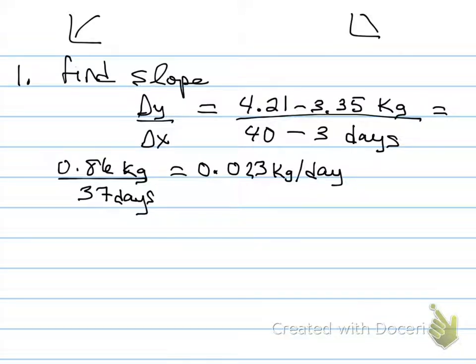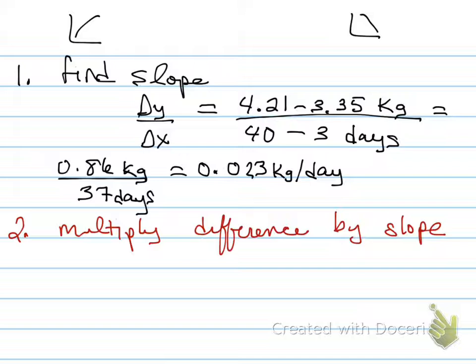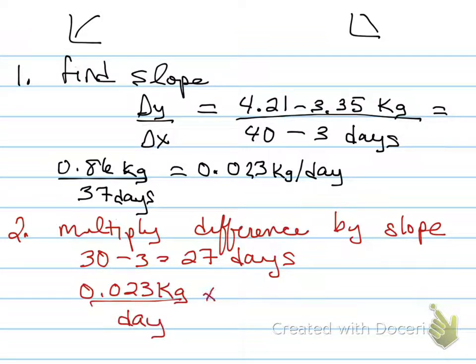So then the second step comes along, and what we're going to do here is multiply the difference between the data we have and the measurement that we want by the slope. So we wanted 30 days, and our initial measurement was 3, so the difference between 30 and 3 is 27 days. So what we're going to do is take 0.023 kilograms per day – that's a rate, so it's a fraction, so I can use dimensional analysis to figure out how many kilograms should have been gained assuming a linear relationship over the course of that 27 days.